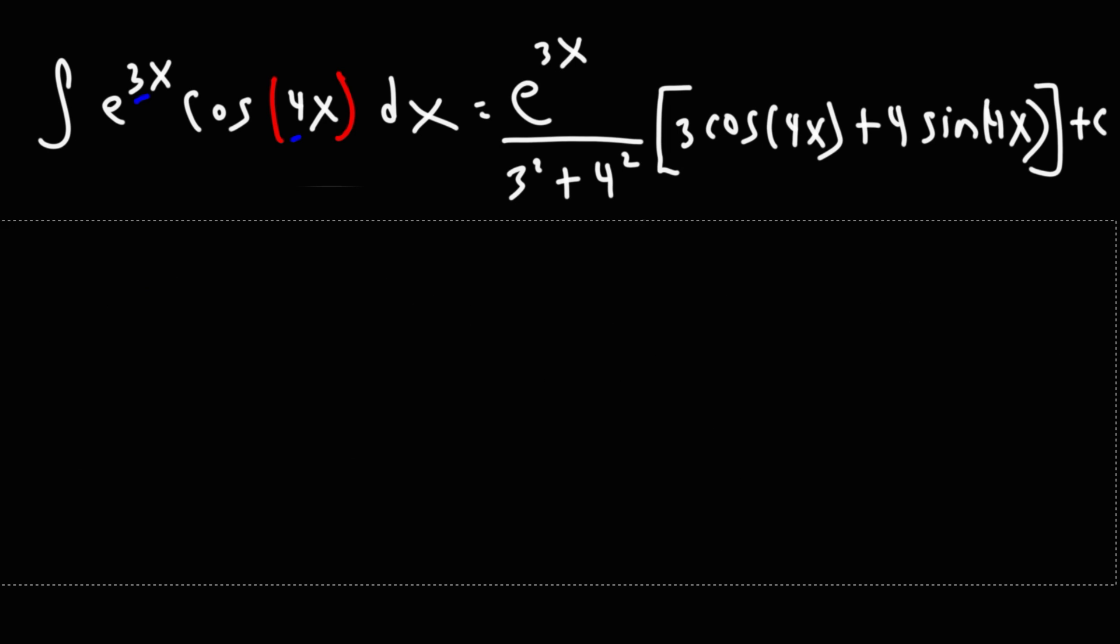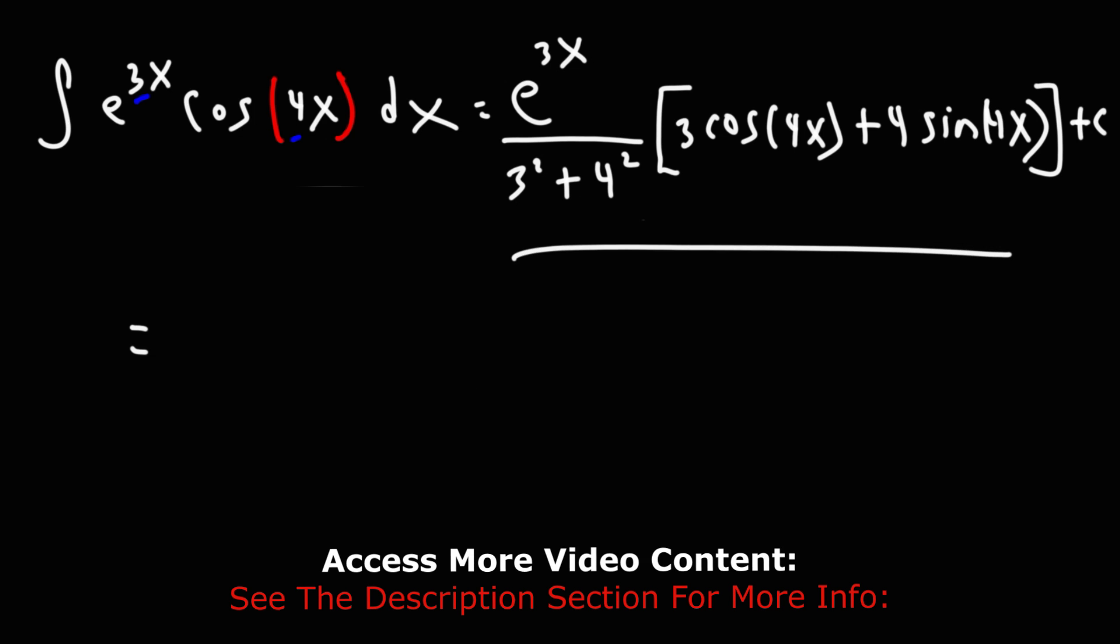But now, if you're going to compare it to the answer that I have in my other integration by parts video, it's going to look a little different, and I'll explain why. First, let's simplify what we have here. 3 squared is 9, 4 squared is 16, 9 plus 16 is 25.